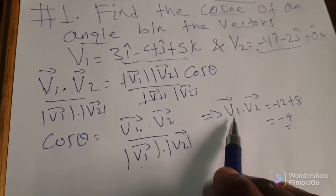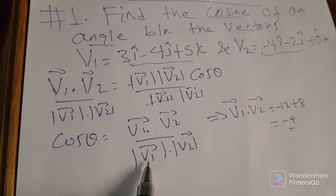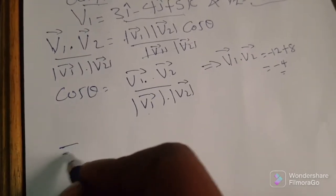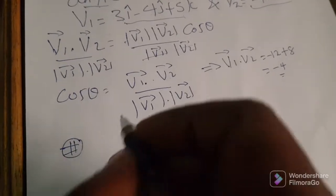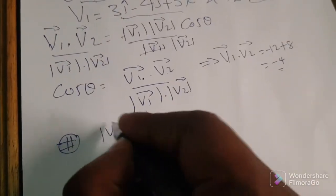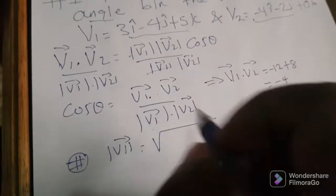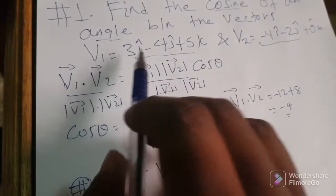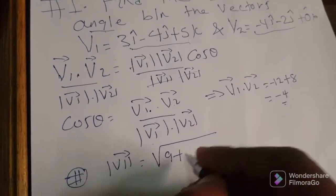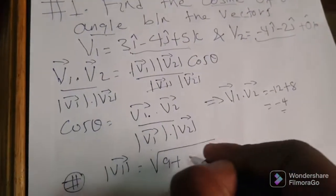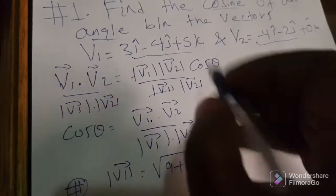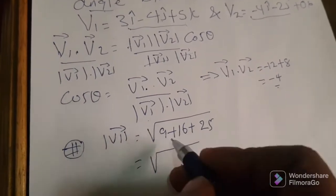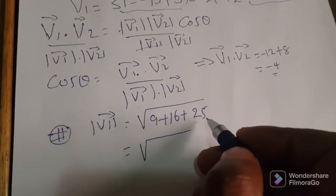Now we need the norms. The norm of V1 is the radical of the components squared: 3 squared is 9, plus 4 squared is 16, plus 5 squared is 25. So the radical of 9 plus 16 is 25, plus 25 is 50.